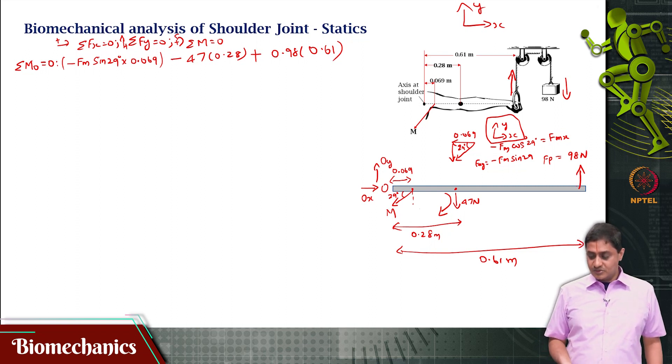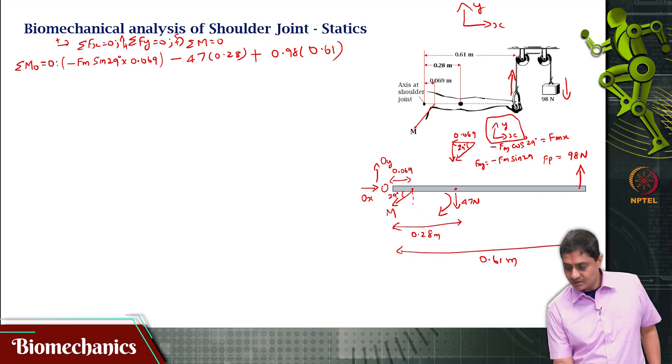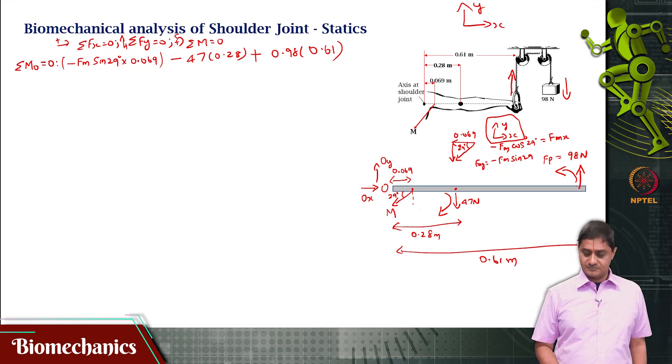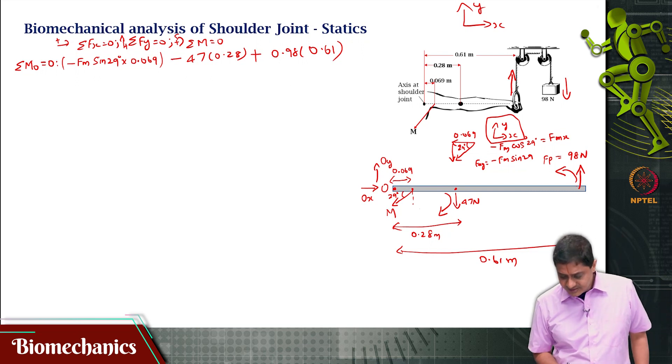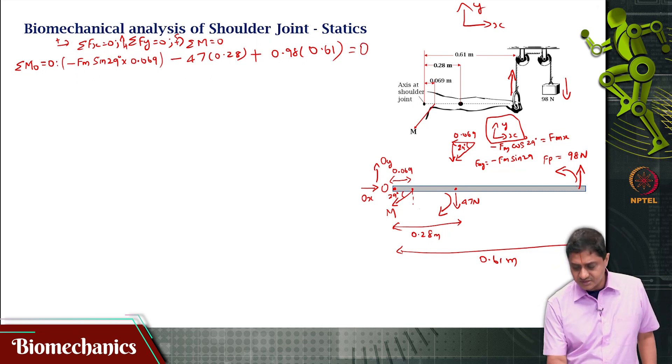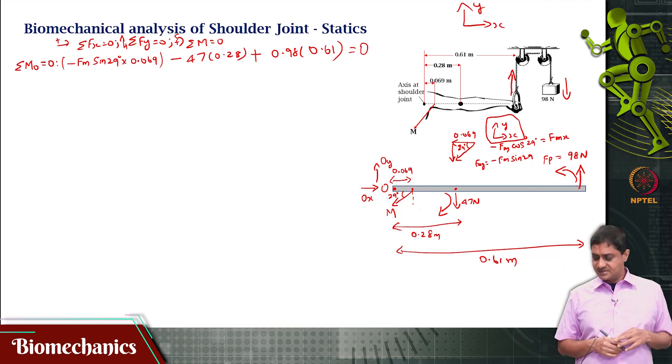So, that force will cause a counter clockwise moment, like this, because about this pivot o, it will cause a counter clockwise moment. Alright. Any other forces that are there, that we have to look at, there are no other forces, and the whole thing is 0.